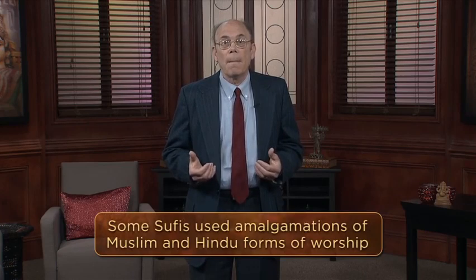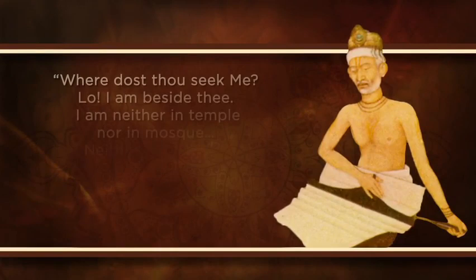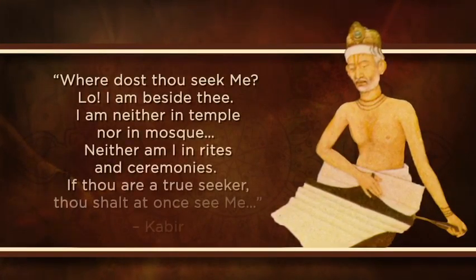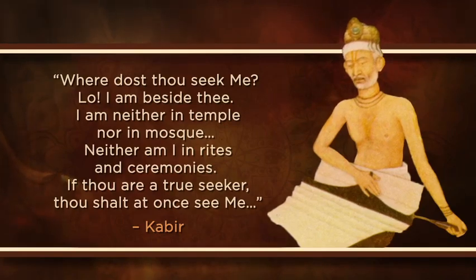Since some Sufis were so eclectic, some of their ways of reaching and expressing their love for the divine were amalgamations of Muslim and Hindu forms of worship. Some Sufi holy men denied that there was any true distinction between Allah and Hindu deities. For example, the 15th century North Indian mystic and poet Kabir rejected the worldly requirements of both Islam and Hinduism, singing to his followers. In a poem later translated by the Nobel Prize-winning Rabindranath Tagore, Kabir identifies with God and proclaims: 'Where dost thou seek me? Lo, I am beside thee. I am neither in temple nor in mosque, neither am I in rites and ceremonies. If thou art a true seeker, thou shalt see me at once.' In addition to the religious messages of Sufis, some of them and their disciples also carried with them more practical expertise that would enable their local Indian supporters to prosper.